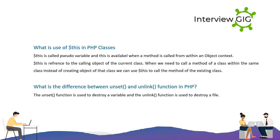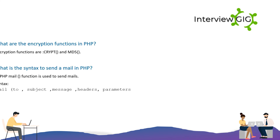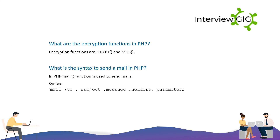What is the difference between unset and unlink in PHP? The unset function is used to destroy a variable, and the unlink function is used to destroy a file.